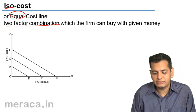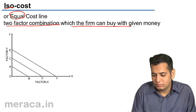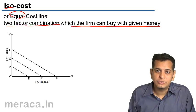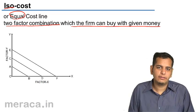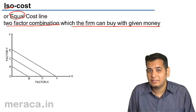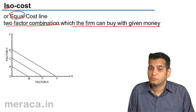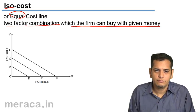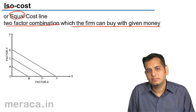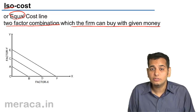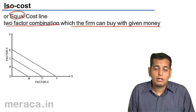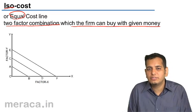When two factor combinations are employed, what is the combination that a firm can employ within the given budget, within the given sum of money? We can draw a parallel here between the ISO cost line and the budget line. The budget line was from the perspective of a consumer, wherein the consumer had a limited budget and had to stay within it. Same is the case where the producer wants to know the cost of various combinations of factors of production and how his cost changes if he changes the combination.